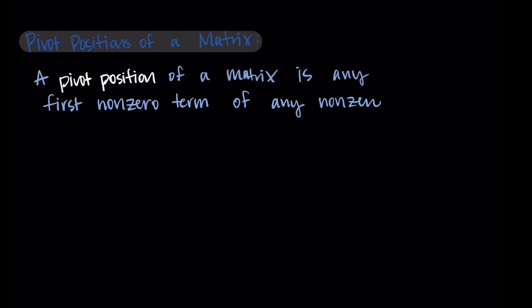Let's start with our definition. A pivot position of a matrix is any first non-zero term of any non-zero row of that matrix. This sounds pretty complicated, but the actual concept is pretty simple to identify.